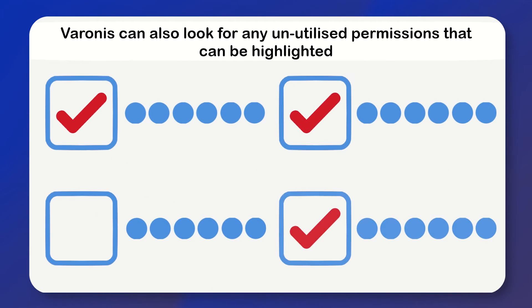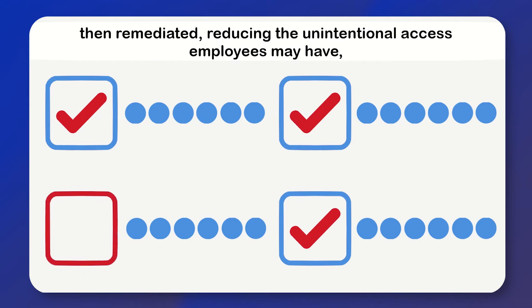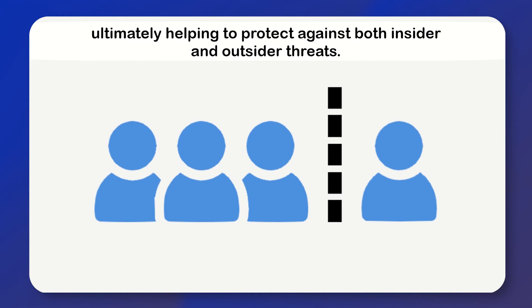Varonis can also look for any unutilised permissions that can be highlighted, then remediated, reducing the unintentional access employees may have, ultimately helping to protect against both insider and outsider threat.